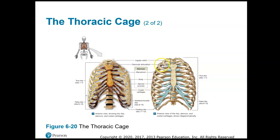The first seven pairs of ribs are true ribs because they're directly connected to the sternum by costal cartilages. The other ribs are false ribs — either not connected at all, which would be the floating ribs, pairs 11 and 12, or pairs 8, 9, and 10, which are indirectly connected through cartilage that attaches to the cartilage directly on the sternum. Pairs 8 through 12 are false ribs, and specifically pairs 11 through 12 are floating ribs.